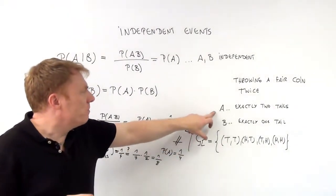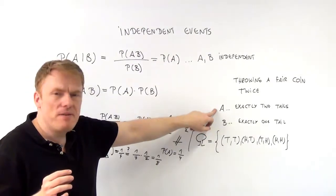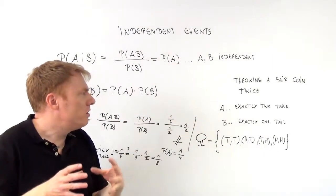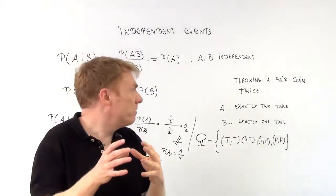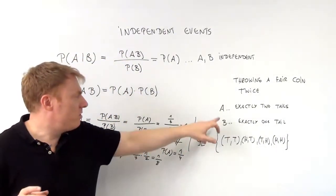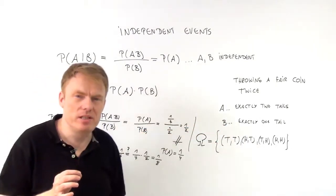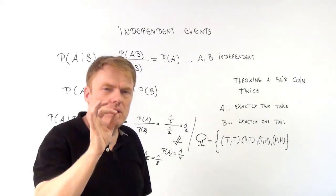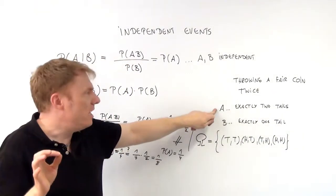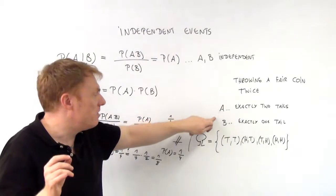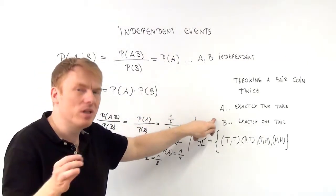Two events will be examined. Event A: the probability of getting exactly two tails. Event B: the probability of getting exactly one tail. We now ask the question: is event A — getting exactly two tails — dependent or independent from event B — getting exactly one tail?